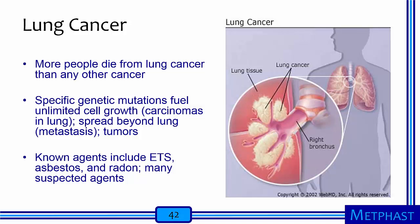The last disease I will mention is lung cancer. Lung cancer causes more deaths than any other cancer. It starts when a specific genetic mutation fuels unlimited cell growth, forming carcinomas in the lung. These growths can then metastasize, meaning that the cancer spreads beyond the lung, and tumors can then form. Known agents include environmental tobacco smoke, asbestos, and radon gas. There are many suspected agents.